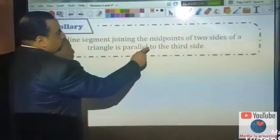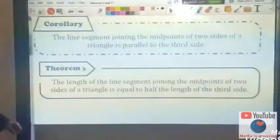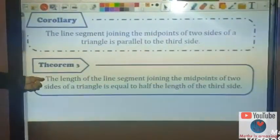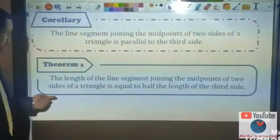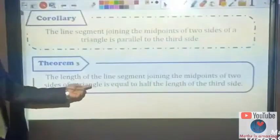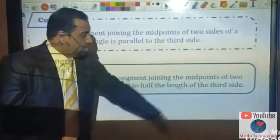And Theorem 3: the length of the line segment joining the midpoints of two sides of a triangle is equal to half the length of the third side. This shows it on the figures.